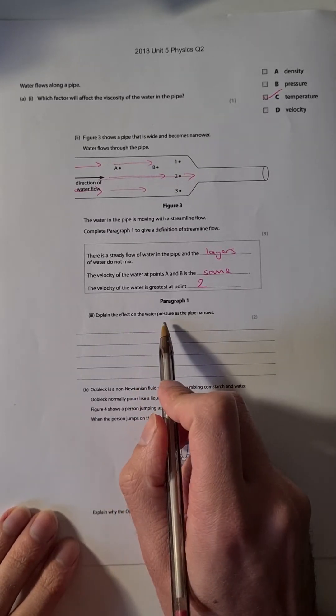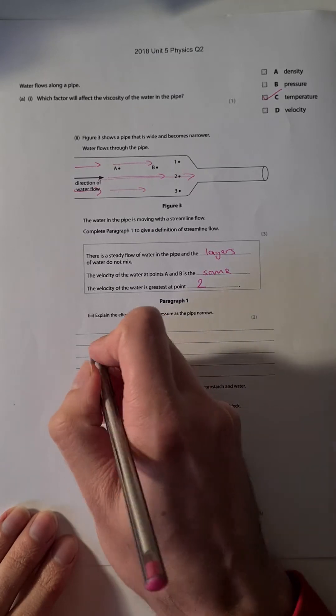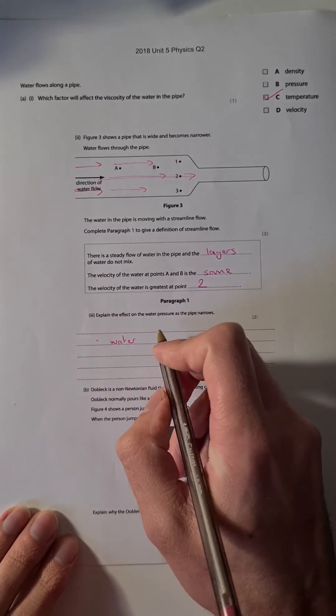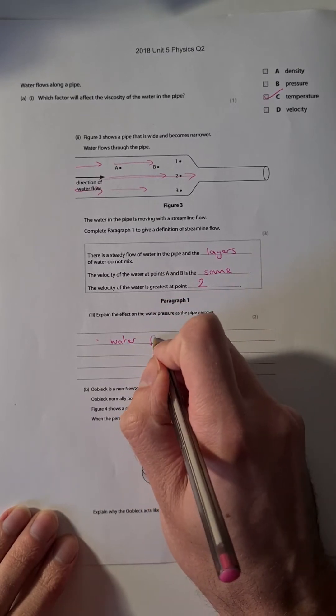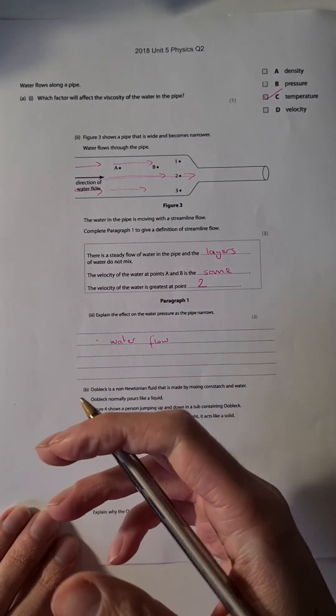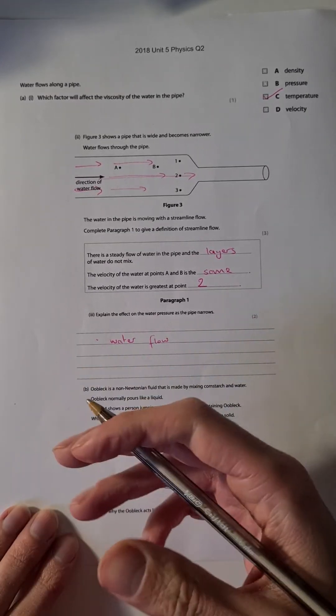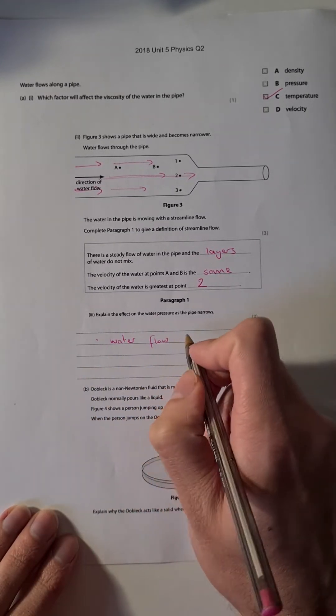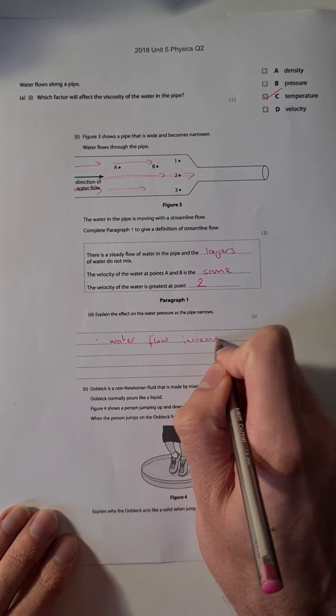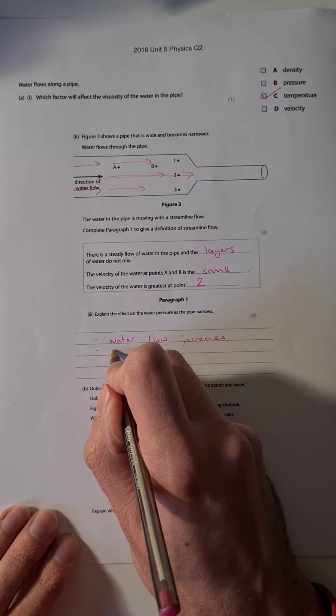Explain the effect of the water pressure as the pipe narrows. So as the pipe narrows, the water flow - or the rate of water movement or rate of velocity - anything to describe the speed of it, you just say it goes faster. The water flow increases. If we narrow the pipe, that reduces the pressure, or pressure decreases.